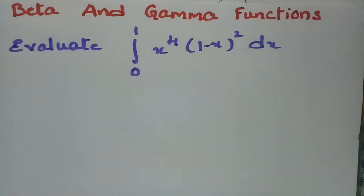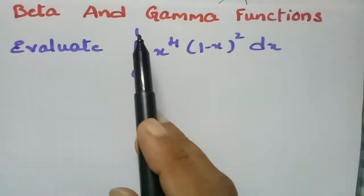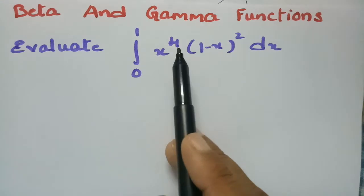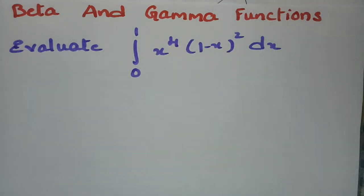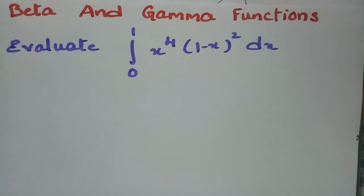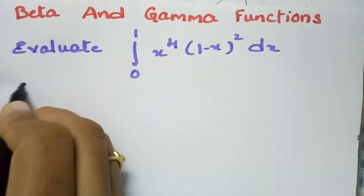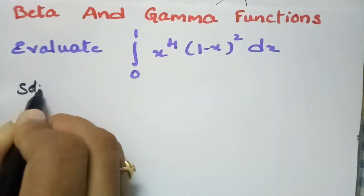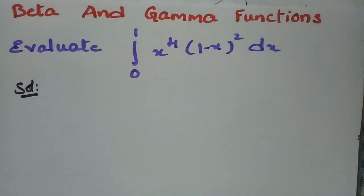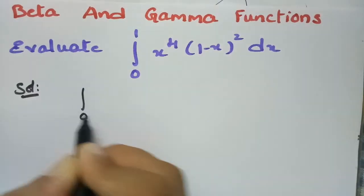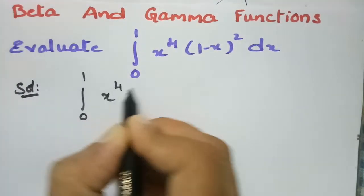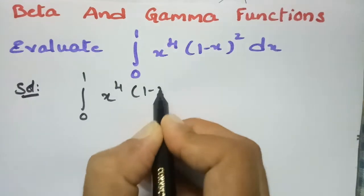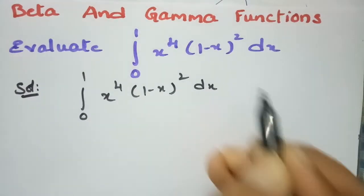This problem is from beta and gamma functions. We have to evaluate the integral from 0 to 1 of x to the power 4 into (1 minus x) squared dx.